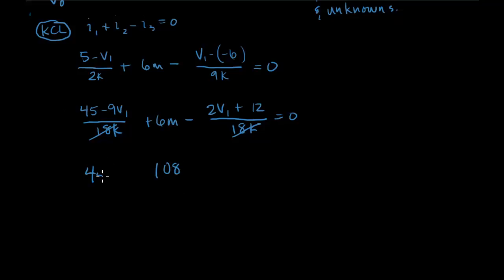So we get 45 minus 9V1 plus 108 minus 2V1 minus 12, because this negative, we're subtracting these values so we can really apply the negative to both of these here. And that equals zero.